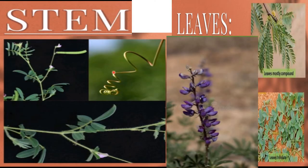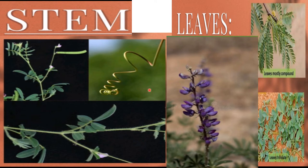Stem. It is branched, smooth or glaucous, may be erect or weak, herbaceous or it could be woody. Most of the plants which come under Fabaceae will be either having a smooth or glaucous stem or an erect or weak stem. Some of the plants are even climbing with the help of tendrils.